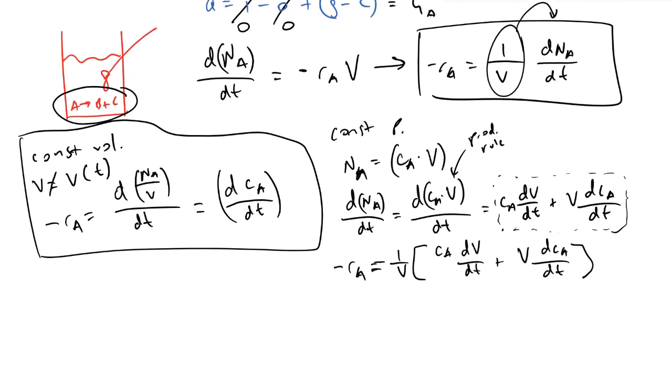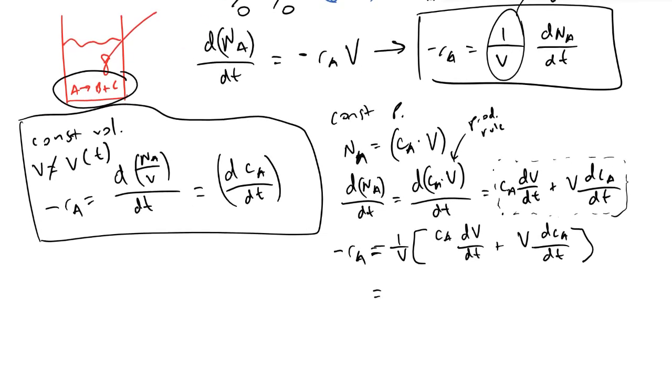And so what you're going to note here is what we will end up with is cA over V times dV/dt plus V over V dcA/dt. This term goes to one.